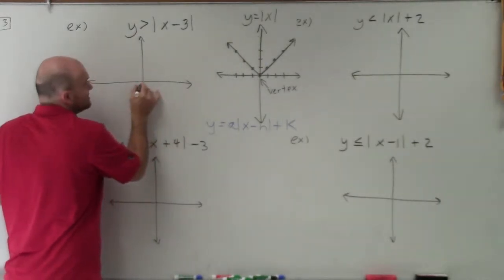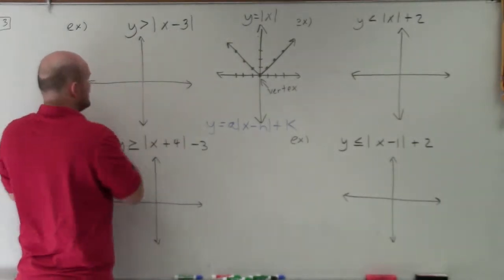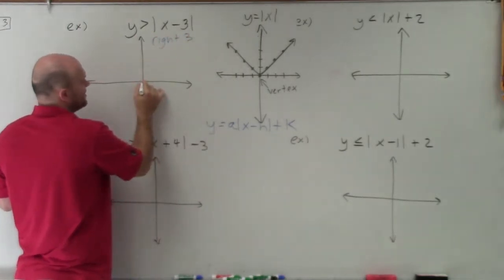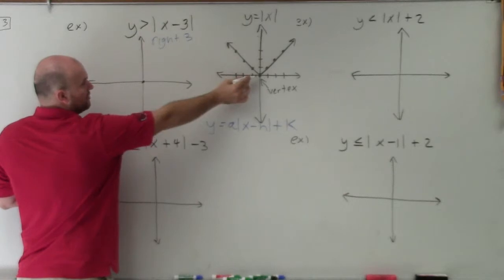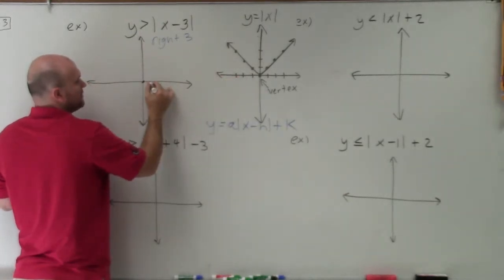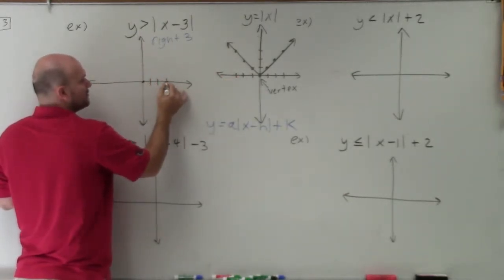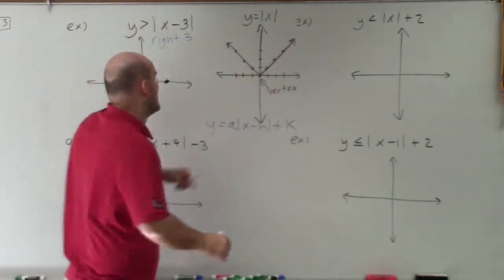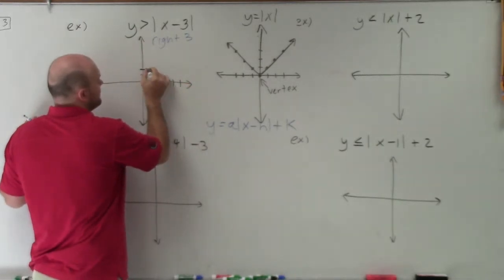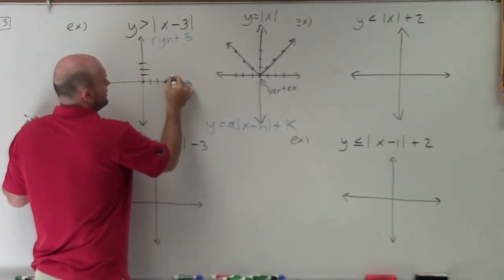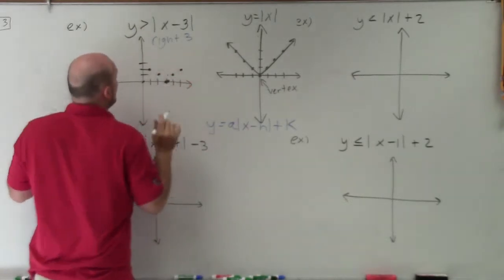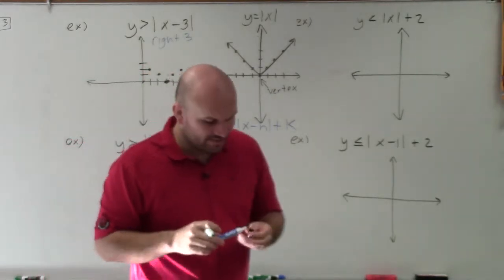For the first example, I have a transformation that tells me to shift right 3 units. So instead of the vertex being at (0, 0), I'm going to shift it over 3 units to (3, 0). Then I redraw the parent graph from that new vertex: up 1, over 1, up 1, over 1, continuing in both directions. That's going to be basically the shape of my graph.